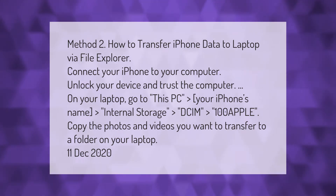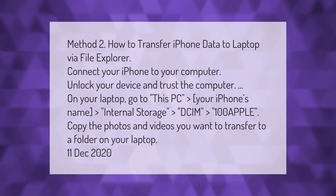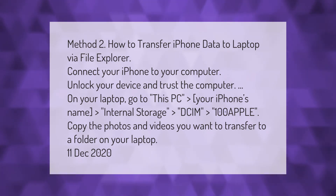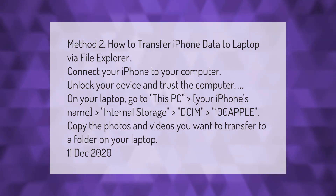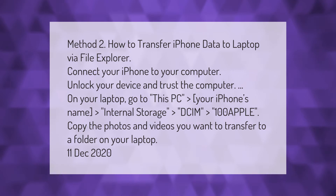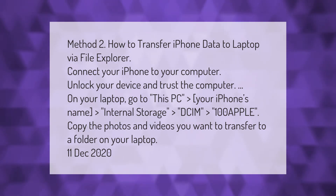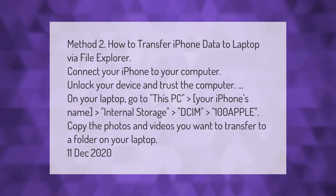Method two: how to transfer iPhone data to a laptop via File Explorer. Connect your iPhone to your computer, unlock your device, and trust the computer. On your laptop, go to This PC > your iPhone's name > Internal Storage > DCIM > 100APPLE. Copy the photos and videos you want to transfer to a folder on your laptop.